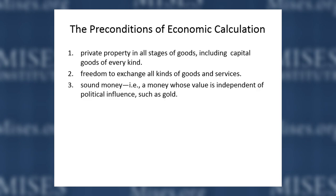Mises pointed out three preconditions of economic calculation. First, private property in all stages of goods — people must be able to own all kinds of capital goods, factories, natural resources like coal mines, diamond mines, oil sources, and fisheries. Second, exchange — people must be permitted to exchange these things so that a market generates prices usable for calculation. Third, sound money — a money whose value is not controlled by politicians. Socialism abolishes all three, making economic calculation and rational allocation of resources impossible.